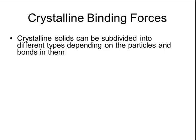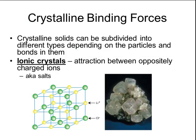All crystalline solids can be subdivided into four different types depending on the particles and the bonds that form between them. We mentioned these four different types of binding forces when we talked about chemical bonding, but we'll explore them in a little more detail here. The first type are ionic crystals, and this occurs when there is an attraction between oppositely charged ions. Normally we call ionic crystals salts. For example, lithium chloride forms a cubic lattice structure and therefore forms cube-shaped crystals.